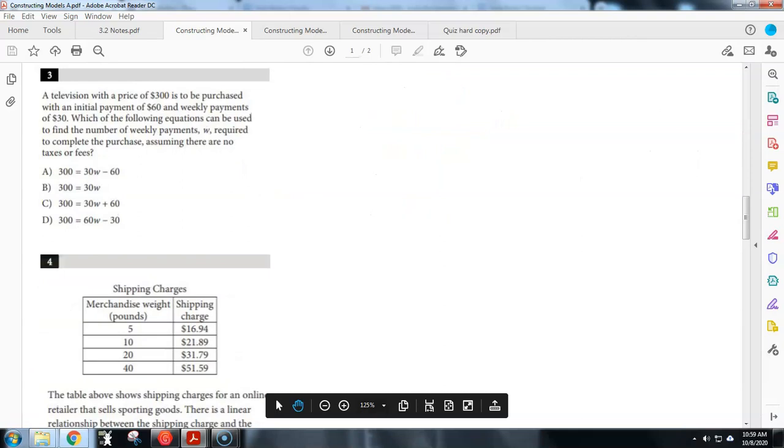All right. Next question. Number three. TV with a price of $300 is to be purchased with an initial payment of 60 and weekly payments of 30. So what are we trying to find? Which of my equations can be used to find the number of weekly payments, W, required to complete the purchase?